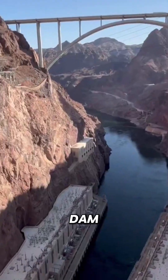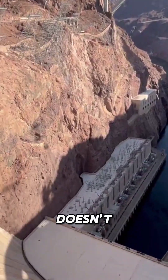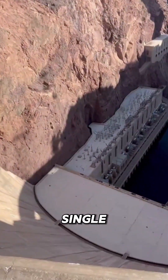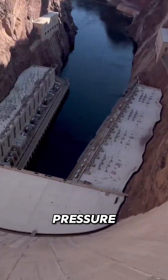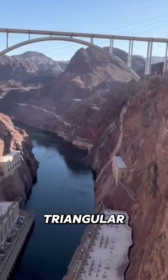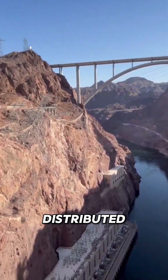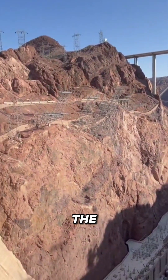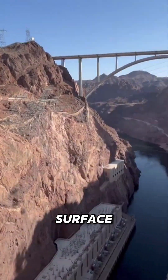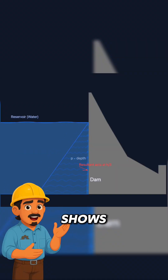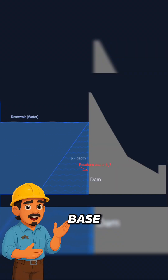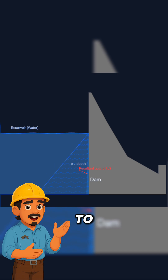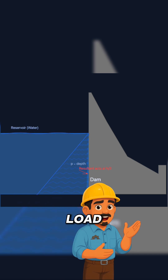First, the Hoover Dam. Water doesn't push at one single point. Pressure increases with depth, creating a triangular distributed load across the entire surface. Our simulation shows that force pressing hardest at the base, which is why the dam is built thicker at the bottom to resist that massive load.